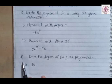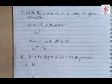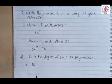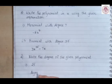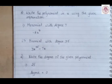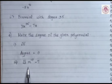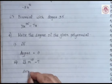Question number 4 is: write the degree of the given polynomial. The first question is root 5. Root 5 is a constant polynomial and the degree of any non-zero constant polynomial is 0. For the second polynomial, root 2 times m raised to power 10 minus 7, the highest index of m is 10 and therefore the degree of this polynomial is 10.